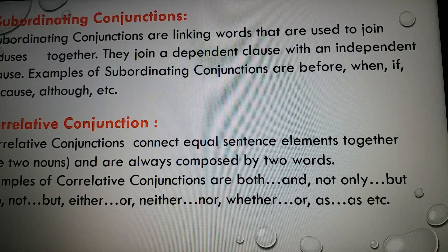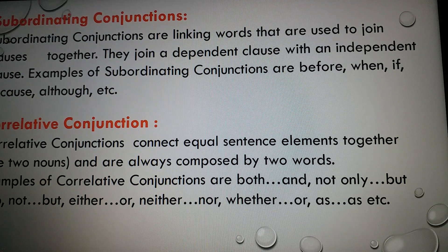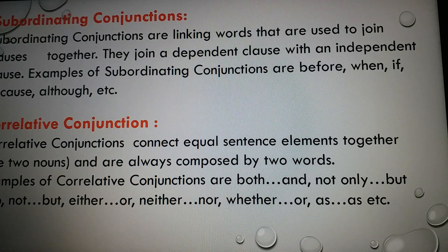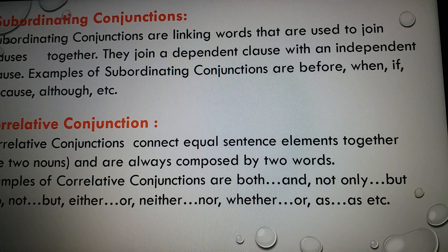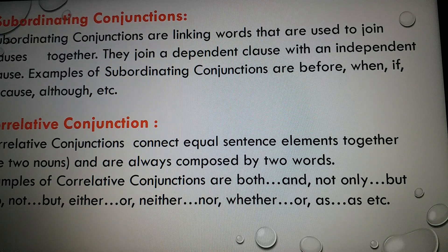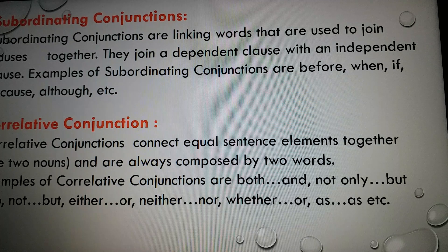Subordinating conjunctions are linking words used to join clauses together. They join a dependent clause with an independent clause. Examples of subordinating conjunctions are: before, when, if, because, although, etc. Correlative conjunctions connect equal sentence elements together, like two nouns, and are always composed of two words. Examples of correlative conjunctions are: both...and, not only...but also, not...but, either...or, neither...nor, whether...or, as...as, etc.